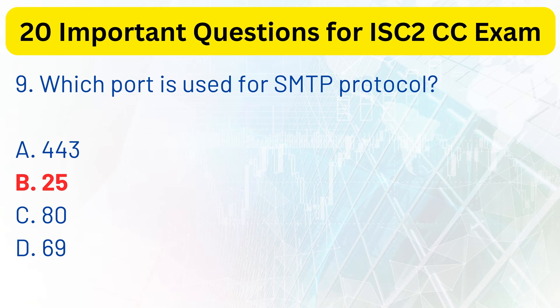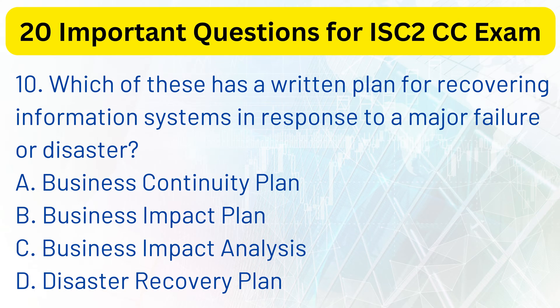Question 10. Which of these has a written plan for recovering information systems in response to a major failure or disaster? a. Business continuity plan. b. Business impact plan. c. Business impact analysis. d. Disaster recovery plan.